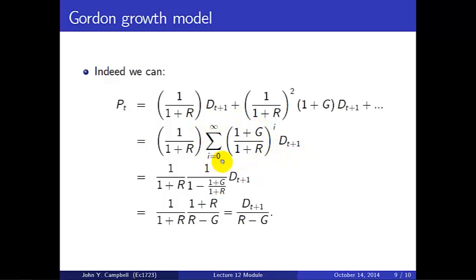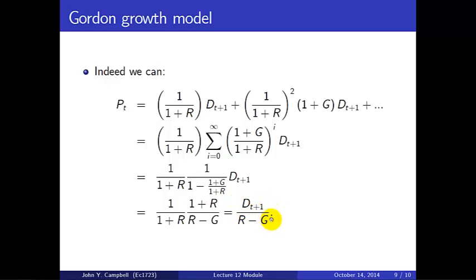This is a geometric series from i=0 to infinity, and we know the sum of x^i from i=0 to infinity is 1/(1−x). Here x is (1+g)/(1+R), so we get 1 over (1 minus (1+g)/(1+R)). We can simplify by multiplying by (1+R)/(1+R), giving us 1/(1+R) times (1+R)/(R−g). The (1+R) terms cancel, and we end up with D_{t+1} divided by (R−g). At the end of the day, the price is the dividend to be paid next period divided by R minus g.